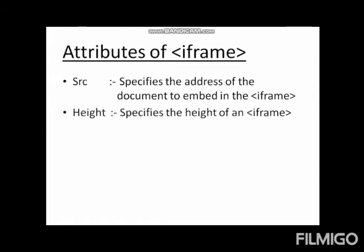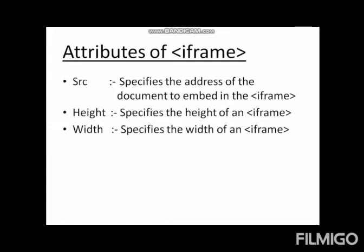Next is the height attribute, which specifies the height of an iframe. Next is the width attribute, which specifies the width of the iframe. Next is the name attribute. Each and every tag has one attribute for identification purpose, and for the iframe tag this is the name attribute. Name specifies the name of an iframe, which is used for identification purpose.